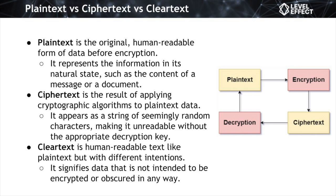Let's look at the types of data involved in cryptographic algorithms. Plain text is the unencrypted, human-readable representation of data—the original content of a message. When we draft emails, create documents, or share messages, we are interacting with plain text. Ciphertext is the outcome of applying cryptographic algorithms to plain text, resulting in unintelligible characters.